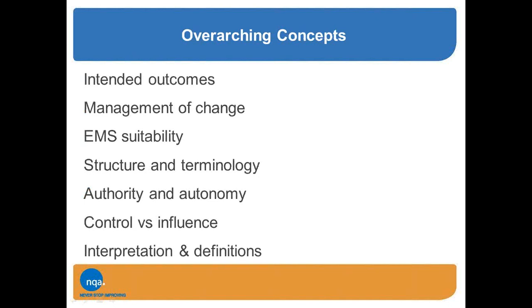There are some new and modified concepts within the standard. Those working in quality management will note that ISO 14001 has no normative references — everything you need is contained in the standard. If you look at the annex, Annex A in 14001 is 14 pages long, compared to only four pages in ISO 9001, reflecting quite a number of areas with different terminology and implications. One of the things the standard looks at is management of change, which crops up throughout.